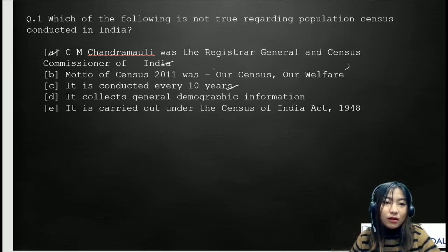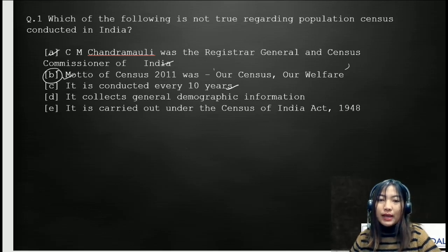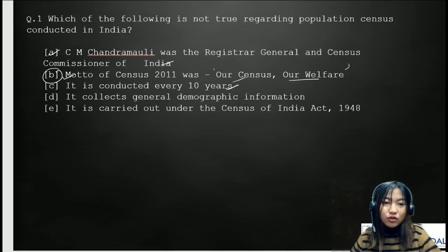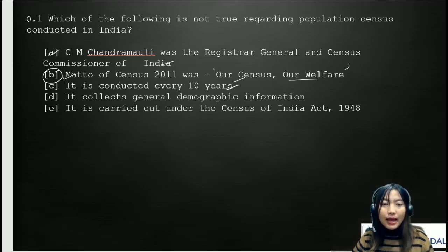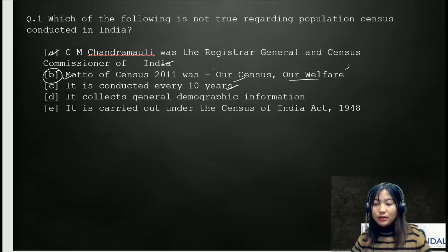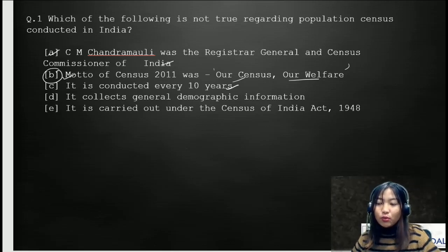The correct answer is option B. The motto of census 2011 was actually 'a woman enumerator,' not 'our census our welfare.' C.M. Chandra Mollie was indeed the Registrar General and Census Commissioner during the 2011 census. It is conducted every 10 years and collects general demographic information, including economic activity, literacy rates, fertility rate, mortality rate, urbanization, and housing.